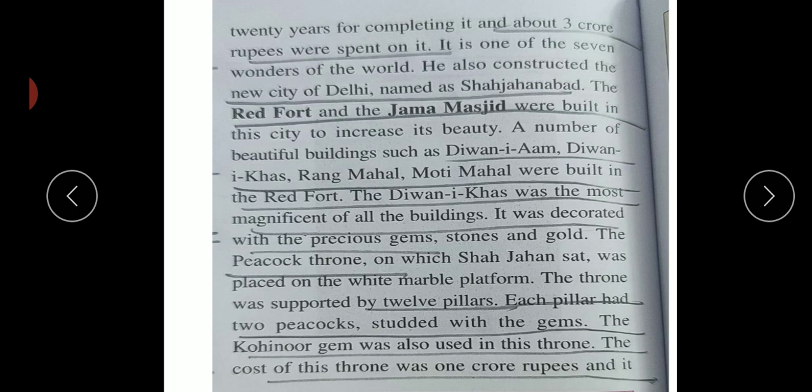Shah Jahan built many beautiful buildings including Diwan-i-Aam for common people, Diwan-i-Khas for the council of ministers, Rang Mahal, Moti Mahal, and the Red Fort. The Diwan-i-Khas was the most magnificent building, using precious gems and gold. His famous Peacock Throne sat on a white marble platform, supported by 12 pillars, each pillar having two peacocks studded with gems.